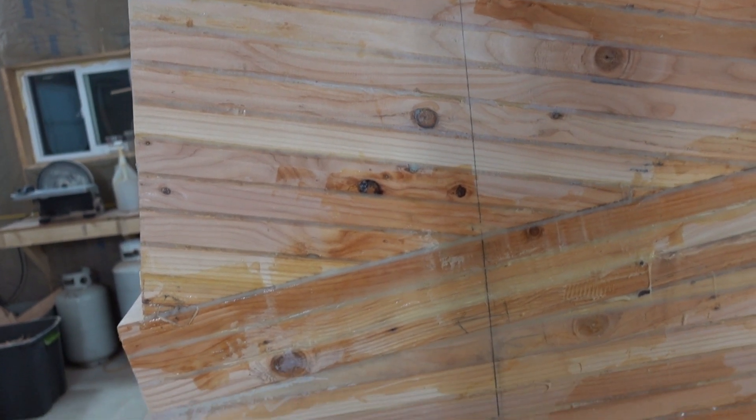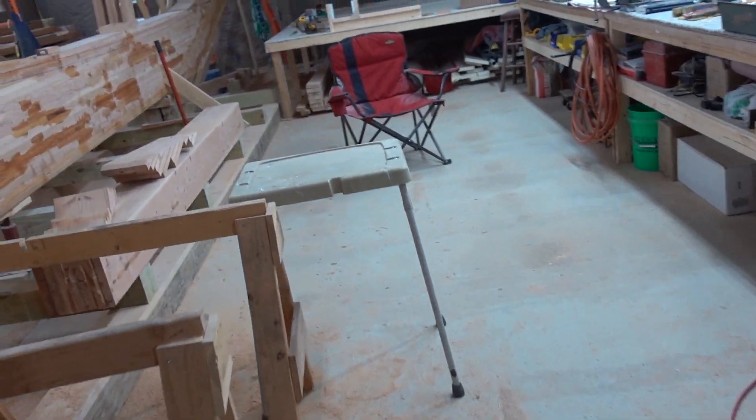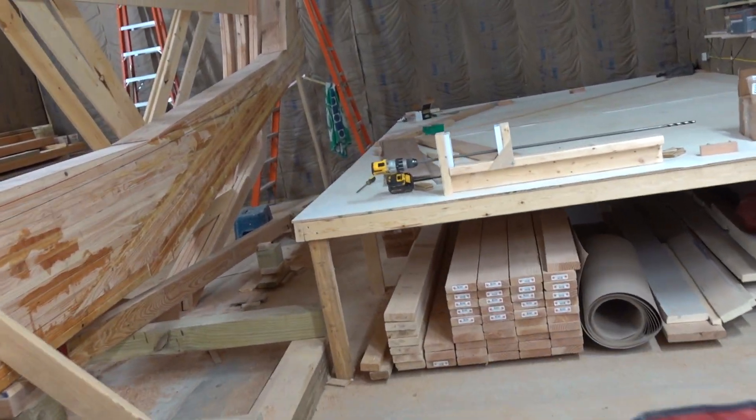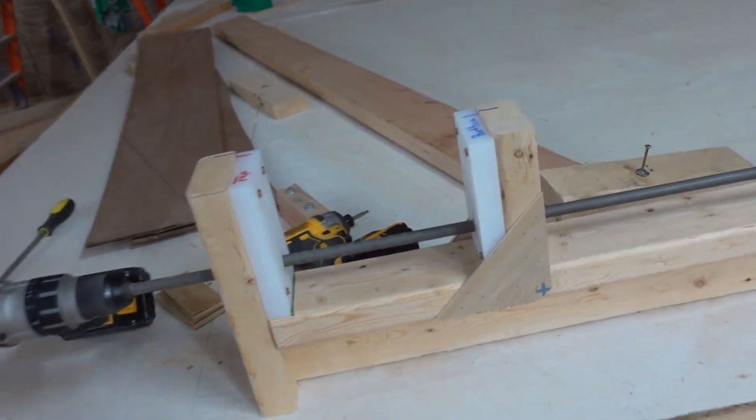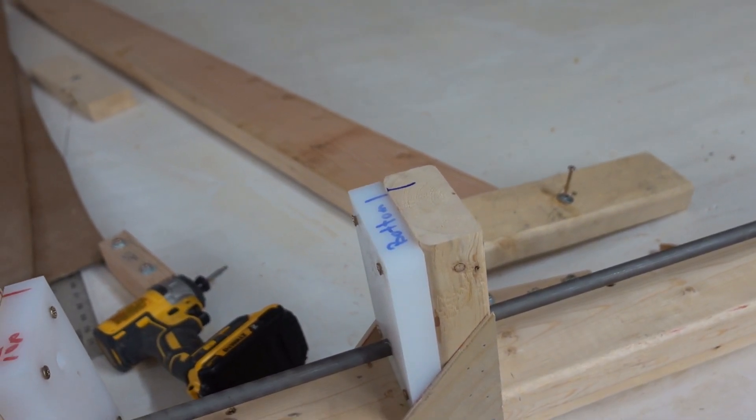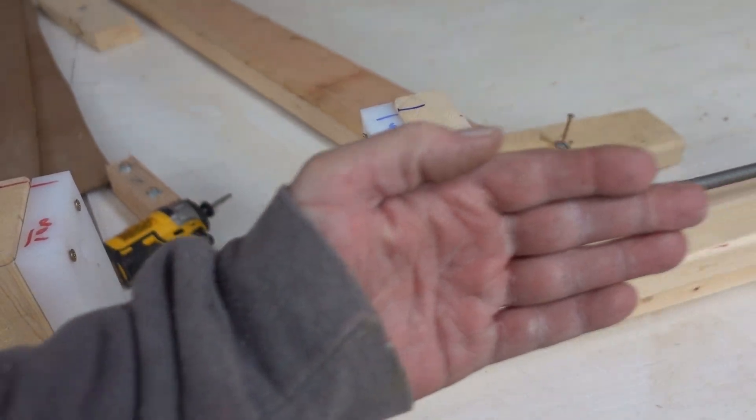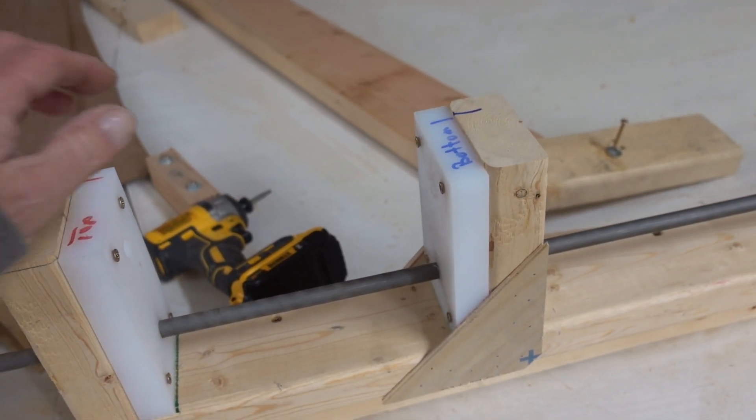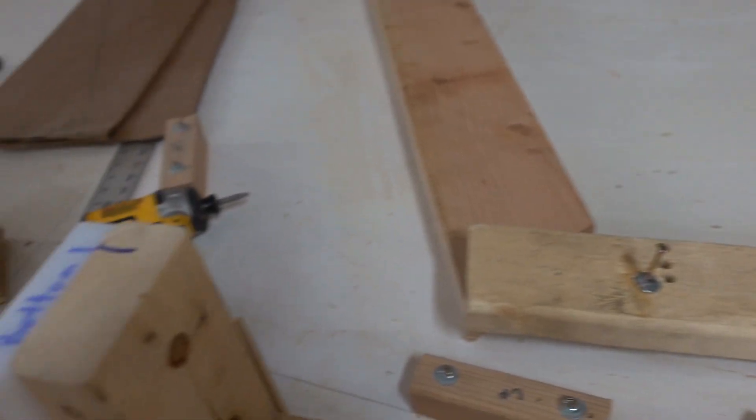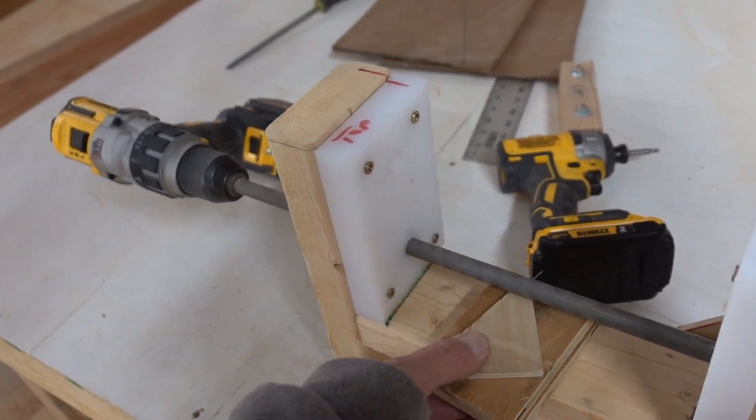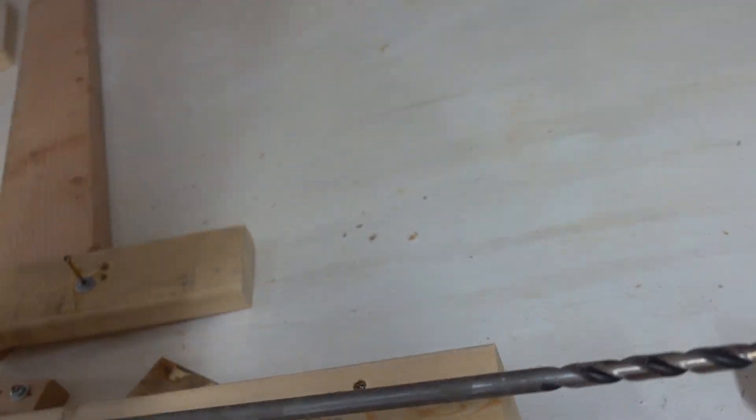Anyway, I made a jig to hold the drill bit. I got it set up back here. What I'll do is I'll just screw this onto the keel. I'll make a couple marks on the keel to keep this vertical.